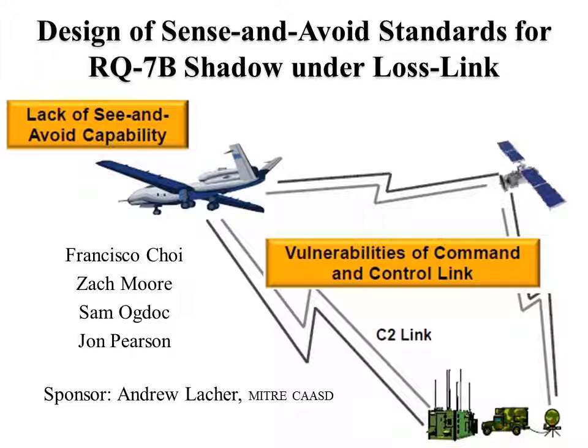When this link is severed, the UAS has to rely on its onboard sensors and pre-programmed procedures to perform collision avoidance. This means that no classic see and avoid can be performed to avoid other air traffic. This lack of sense and avoid capabilities presents issues that the FAA must face before integration can occur.